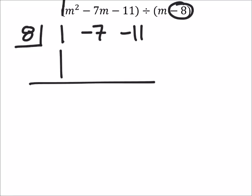And as always, we're going to drop our first coefficient, which is 1. So from here, we've got 1 times 8, which is 8. And that's a positive 8, so I've got negative 7 plus 8, which is a positive 1.